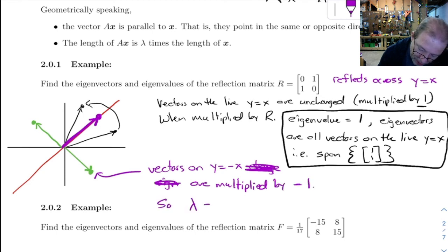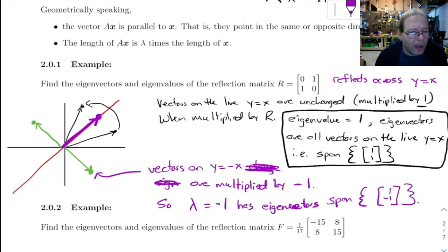So lambda equals negative 1, and its eigenvectors are the span of [1, -1]. All right. Example 2.0.2 we'll do in the next video.